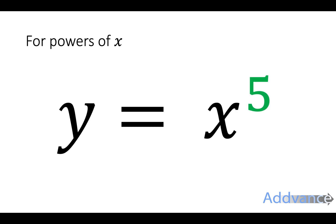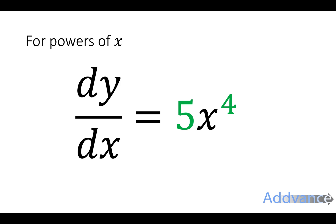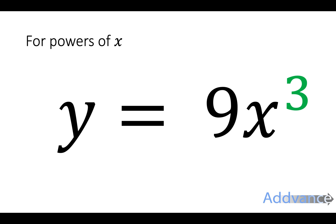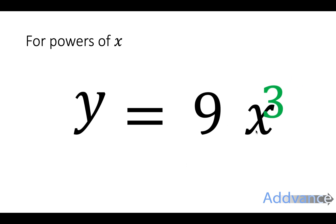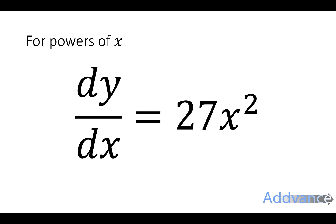Let's see that in action. So y equals x to the power 5 — we multiply down by the power and take one off — gives 5x to the power 4. Again, for 9x to the power 3, we've got a 9 in the front. We still multiply down and take one off the power. 9 times 3 is 27, so the answer is 27x to the power 2. And that's the power rule for differentiation.